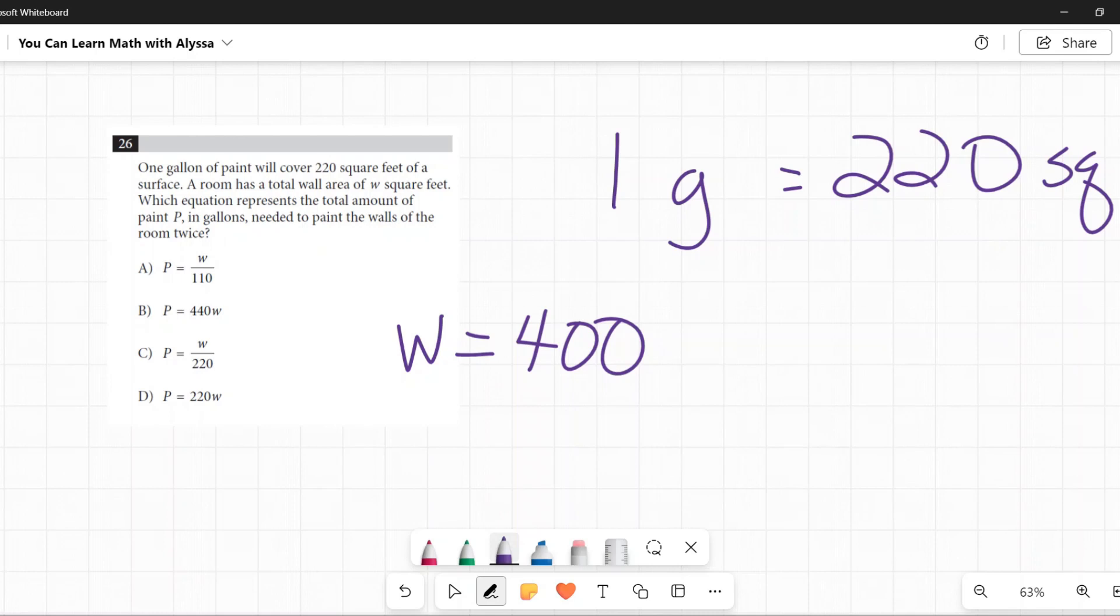How would I figure out how many gallons of paint I would need? I would say, okay, 220 square feet per gallon. Let's divide 400 by 220 to see how many gallons I need.